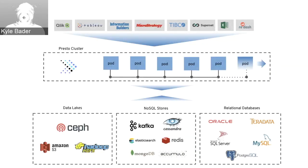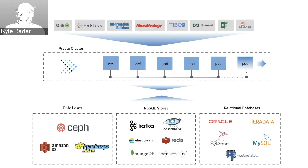Today I'm going to be doing a demo of Presto on OpenShift with OpenShift Container Storage 4. Presto is an MPP engine — a massively parallel processing engine that accepts ANSI SQL — and it doesn't actually have its own data storage engine. Instead it has a variety of different connectors so that it can query data in-situ, where the data lives, without having to copy data into Presto in order to derive insight from that data.